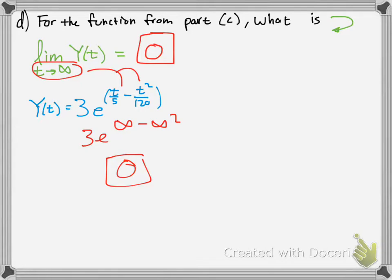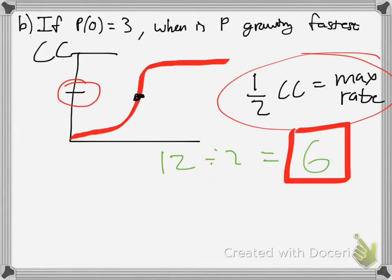If you kind of plug in t here, you get zero infinity minus infinity squared, like 3e to the infinity. I don't know, but there might be a rule or something where e to the infinity... I think I might be wrong, but yeah, I don't know. For some reason it's zero.